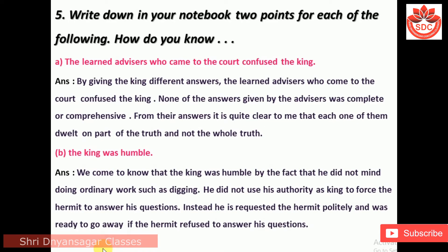Question 5: Write down in your notebook two points for each of the following. A. How do you know the learned advisors who came to the court confused the king? Answer: By giving the king different answers. None of the answers given by the advisors were complete or comprehensive. From their answers it is clear that each of them dwelt on part of the truth and not the whole truth.